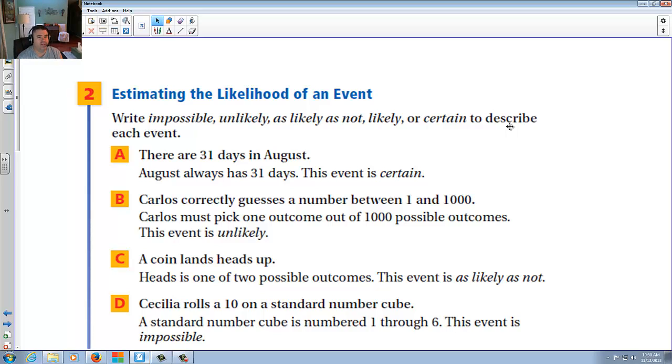A coin landing heads up, well, heads or tails, there's one or two choices. Either it'll be heads or it won't be. So it's 50-50, so that's as likely as it is not, even money. And D, Cecilia rolls a 10 on a standard number cube. Well, in other words, a dice. Well, since a dice only goes from 1 to 6, the chance you roll a 10 is not possible. Therefore, it's impossible.